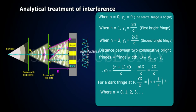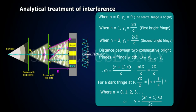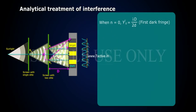For a dark fringe at P, YD by d equals (N + 1/2) lambda, where N equals 0, 1, 2, 3, and so on. Therefore Y equals (2N + 1) lambda D by 2d. When N equals 0, Y0 equals lambda D by 2d — this is the first dark fringe.